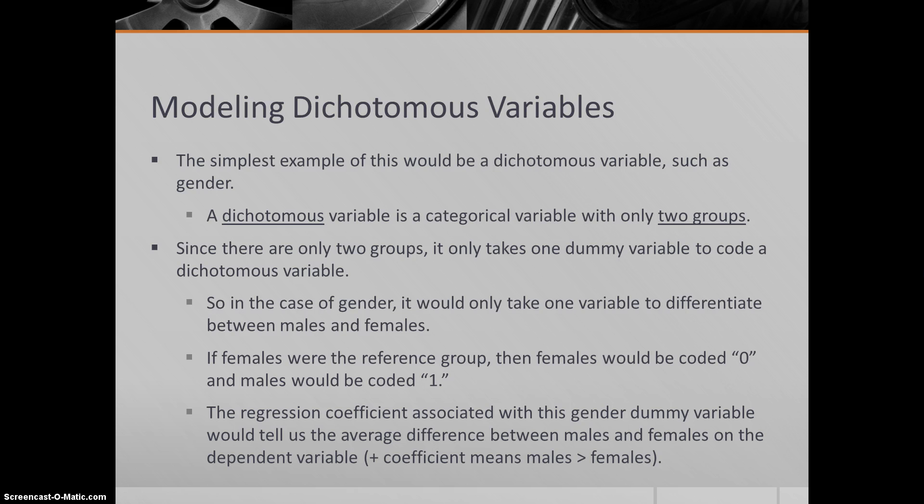Let's first talk about modeling dichotomous variables. That's going to be the simplest example of dummy coding. A dichotomous variable is a categorical variable with only two groups. The simplest or most common example would probably be gender. There's two groups: male and female. It's categorical, it's not continuous. You can't rank male and female. Since there are only two groups, you're only going to require one dummy variable in order to differentiate between males and females. Two groups, two minus one is one.